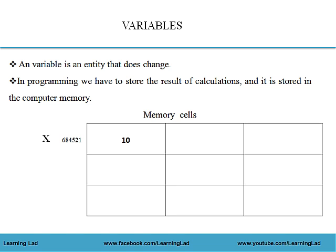Now let's go to the variables. A variable, as the name indicates, is an entity that does change. In programming, we have to store the result of calculations, and these results are stored in computer memory. The computer memory consists of a lot of small memory cells, and each memory cell has its own address.